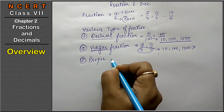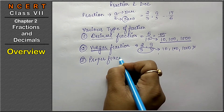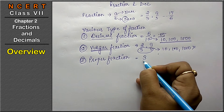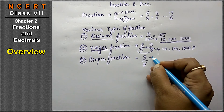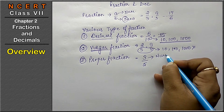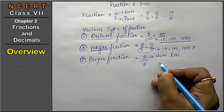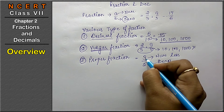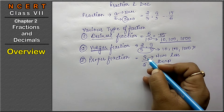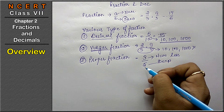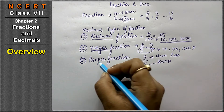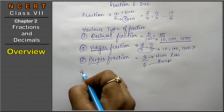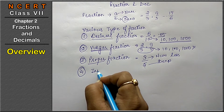The third type is the proper fraction. A proper fraction is one where the numerator is less than the denominator. The upper part (numerator) is smaller, and the lower part (denominator) is bigger. Proper fractions are those where the numerator is less than the denominator.